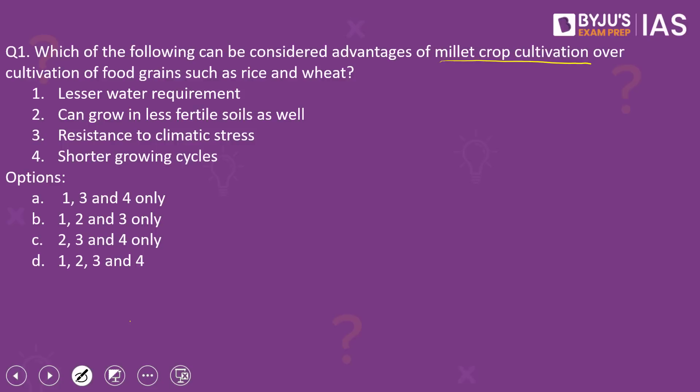What are the advantages of millet crop cultivation over cultivation of food grains such as rice and wheat? The first statement is correct — millets require lesser water. As per the report of the Crops Research Institute for the semi-arid tropics (ICRISAT), one rice plant requires nearly 2.5 times the amount of water required by a single millet plant of most varieties. Hence, the statement that millet crops require lesser water is correct.